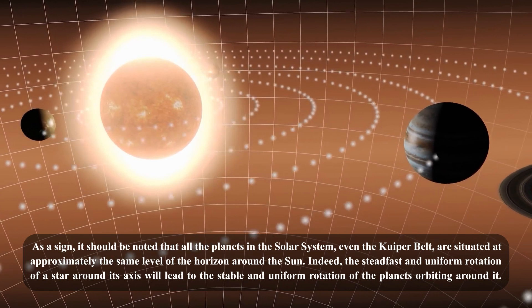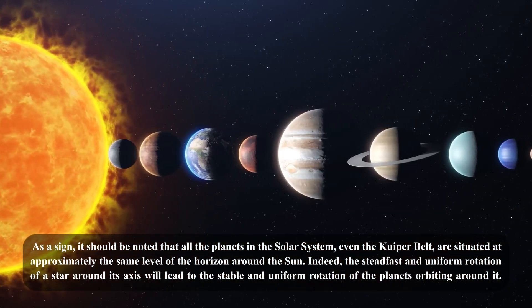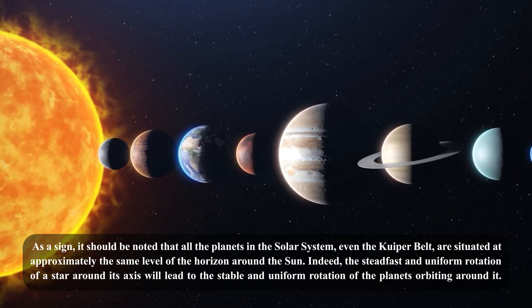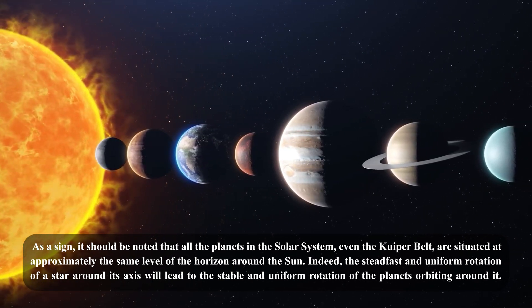Indeed, the steadfast and uniform rotation of a star around its axis will lead to the stable and uniform rotation of the planets orbiting around it.